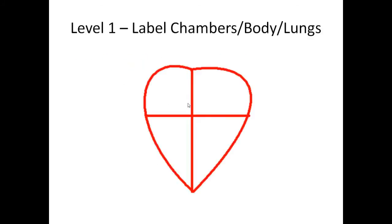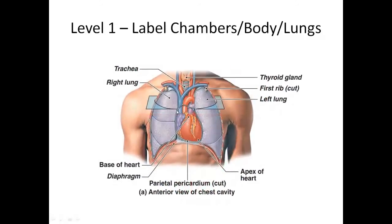Start with a simple diagram of the heart. Just get a piece of paper, draw the heart, and then draw a cross or plus right in the middle to divide it into four different chambers. One thing you've got to decide is what side is the right side and what side is the left side. For example, this side over here — when you're looking at it on the screen, it's to your left, but if somebody were facing you, this would be on their right side.